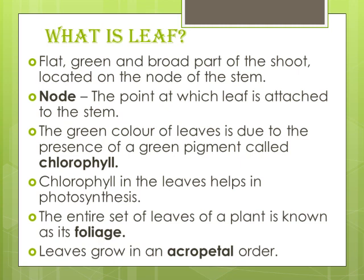Acropetal succession — S-U-C-C-E-S-S-I-O-N. Acropetal succession refers to the arrangement of flowers or leaves in such a way that the new flowers or leaves are at the top of the plant and the older ones are at the bottom. A node, as I have already told you, is the point at which the leaf is attached to the stem.